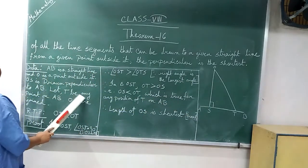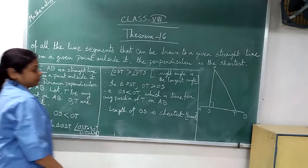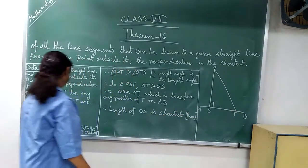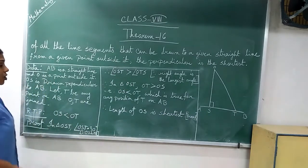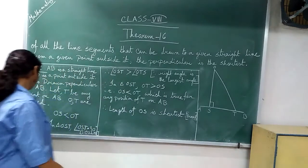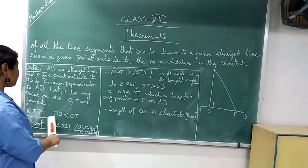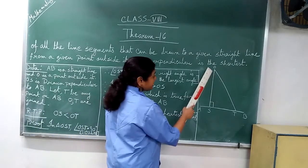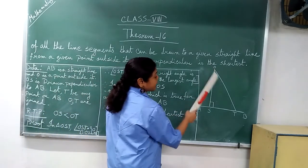Let T be any point on AB. OT are joined. Now required to prove: OS less than OT. So RTP, OS less than OT.